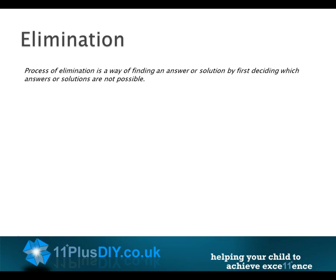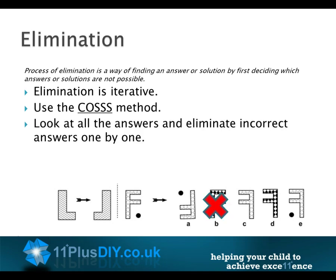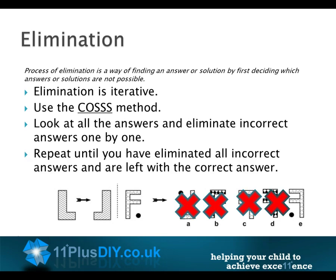Elimination. The process of elimination is a way of finding an answer or solution by first deciding which answers or solutions are not possible. Elimination is iterative — use the COS method. Look at all the answers and eliminate incorrect answers one by one. Repeat until you have eliminated all incorrect answers and are left with the correct answer.